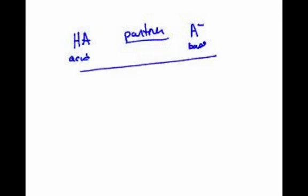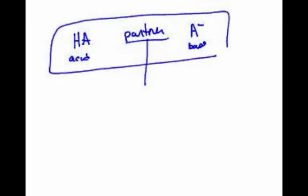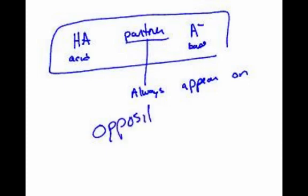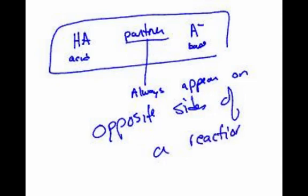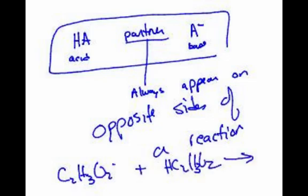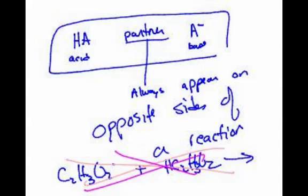And another thing, an important note, whenever we're writing reactions, I want to say this: partners always appear on opposite sides of a reaction. You would never, for example, write C2H3O2 negative plus HC2H3O2, like some kind of arrow thing. Never, ever do this. Because this will create, a lot of students will do this, and it messes all of your math up.